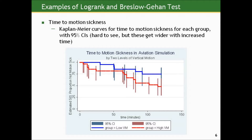Think about why that is. We're losing information as time goes on because our sample size of people eligible to have the event — our number of persons at risk — gets smaller and smaller. The proportions are based on less information, which leads to greater uncertainty. The Kaplan-Meier tracks the proportion of persons who had still not vomited at a given time point. As expected, the curve is higher in the low vertical motion group than the high vertical motion group — those in the low vertical motion group can hold out longer.